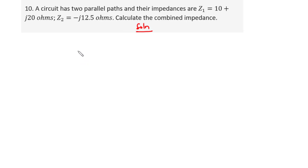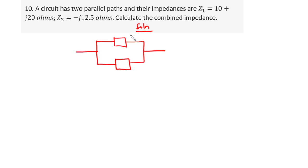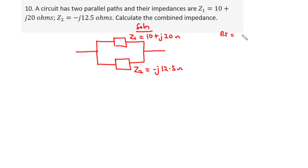Let's solve this question together. According to the question, we have two parallel paths: Z1 and Z2. So let Z1 equal 10 plus J20 ohms, and Z2 equal negative J12.5 ohms. Now, two resistors connected in parallel is given by RT equals R1 times R2 divided by R1 plus R2.